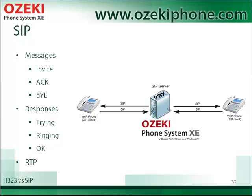Unlike H.323, a SIP call consists of messages and responses. A call between two IP phones and a SIP server can consist of INVITE, TRYING, RINGING, OK, ACK and BYE messages and responses. INVITE messages are used to establish a session between participants. ACK message confirms that the session is created. BYE message terminates the call. TRYING is a response from the SIP server — it signals that the building of the session has been started.